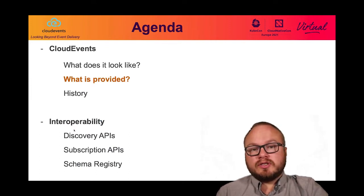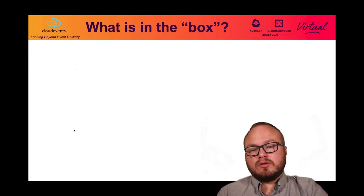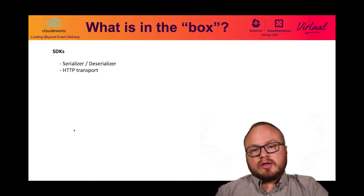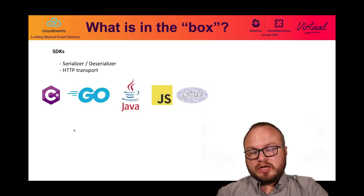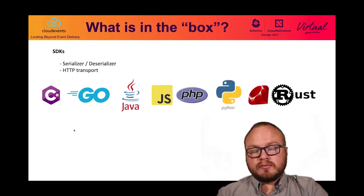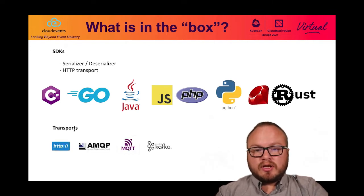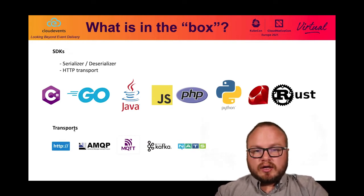So what's in the box? What is provided to you by the community? The SDKs include all serializers and deserializers of Cloud Events and at least the HTTP transport. There are several languages: C#, Go, Java, JavaScript, PHP, Python, Ruby, and Rust. We also support several transports like HTTP, AMQP, MQTT, Kafka, and NATS. You will find all the definitions, like Avro definitions and others, inside our repository.